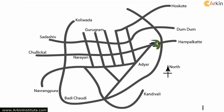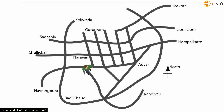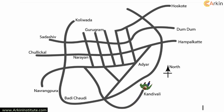A man starts walking from Hampalkate towards the west, takes the second right, second left, first left, third right, second left, and walks on straight to the end of the street. The correct answer is A. Kandivali.